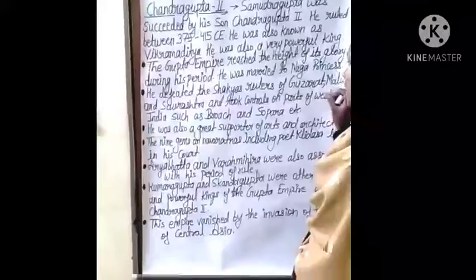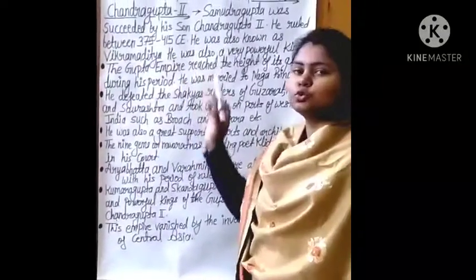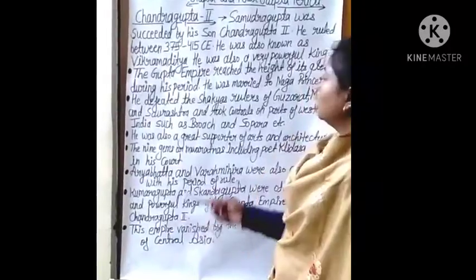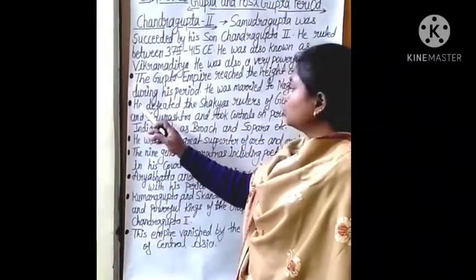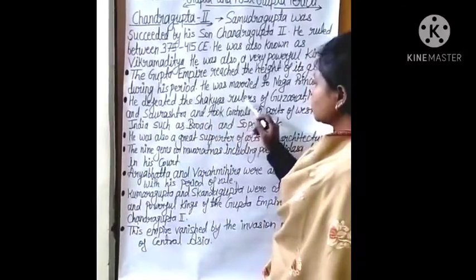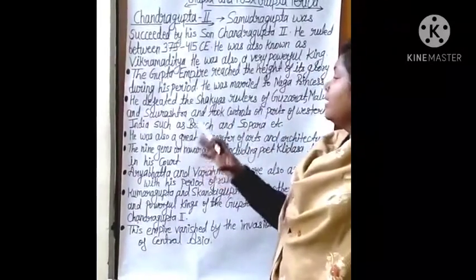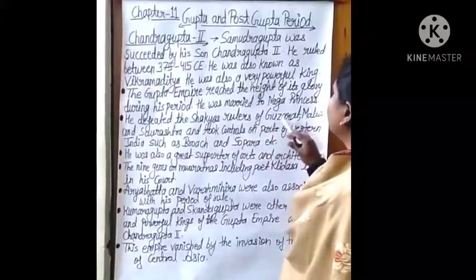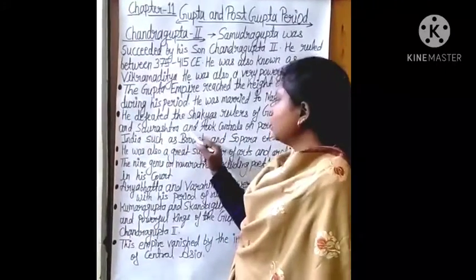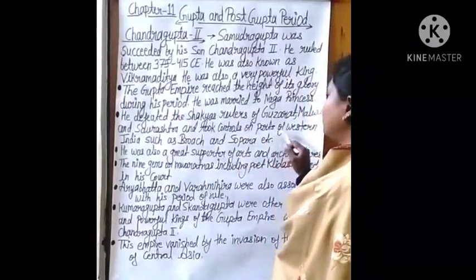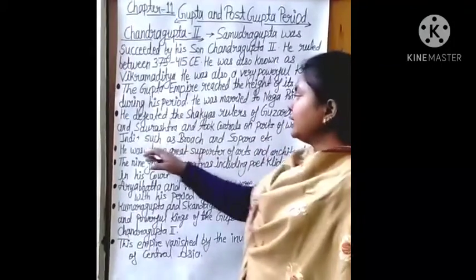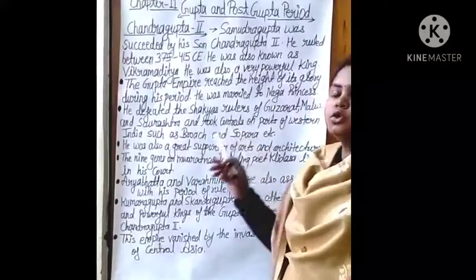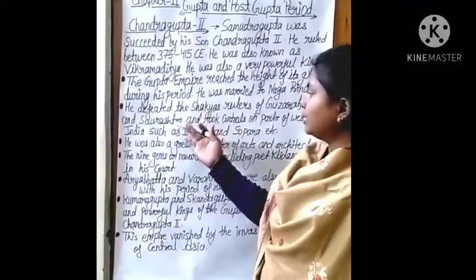Chandragupta 2 was married to a Naga princess. He defeated the Shakyas rulers and took control of Gujarat, Malwa, and Saurashtra, including ports of western India such as Broach and Sopara. So he was a powerful king who defeated many kingdoms.